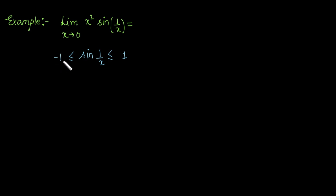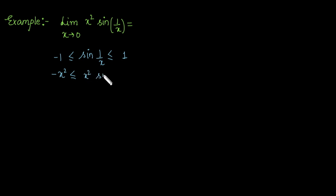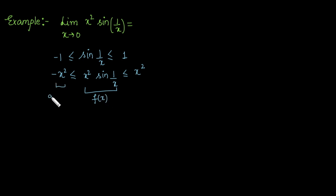Because the minimum value of sin(1/x) is -1 and the maximum value is 1, we multiply this inequality by x². Since x² is always positive, the inequality does not change sign. So we can write: -x² ≤ x² sin(1/x) ≤ x². Here x² sin(1/x) is our original function f(x).